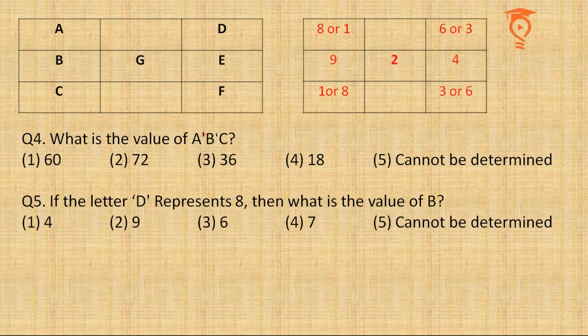Fourth question: what is the value of A times B times C? I think it's A into B into C and we also found this in the very beginning, that is 72.